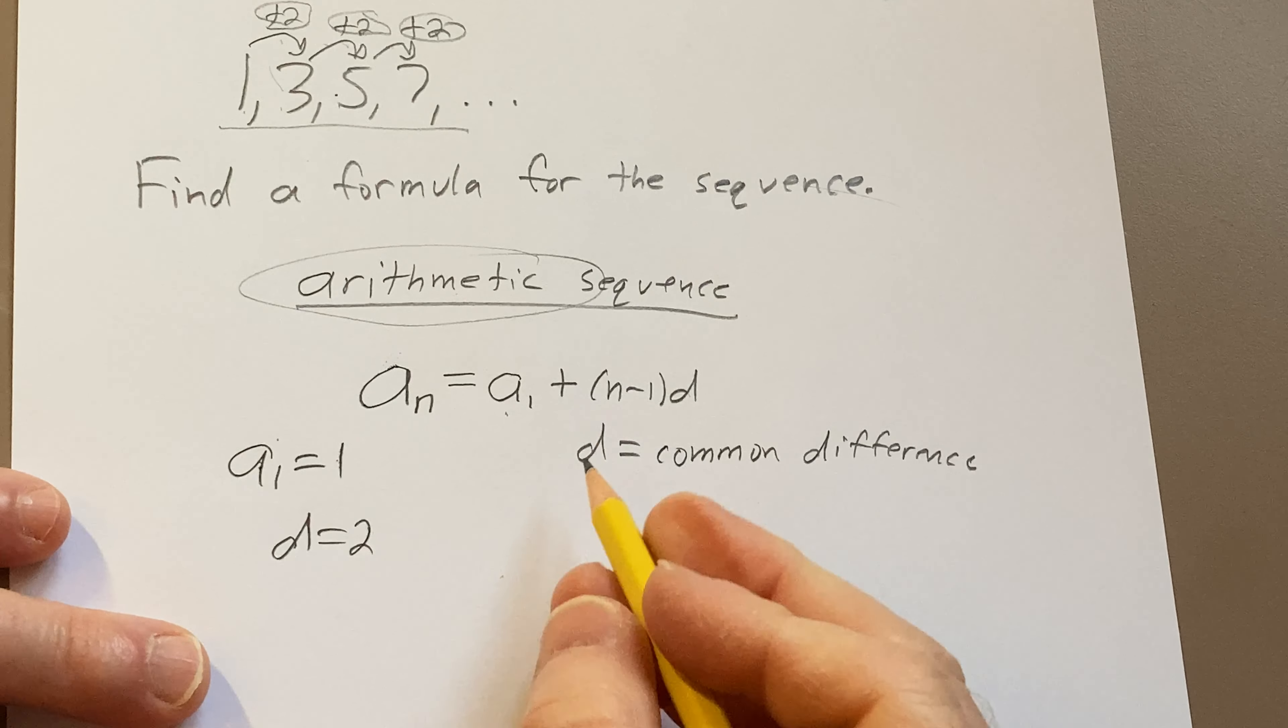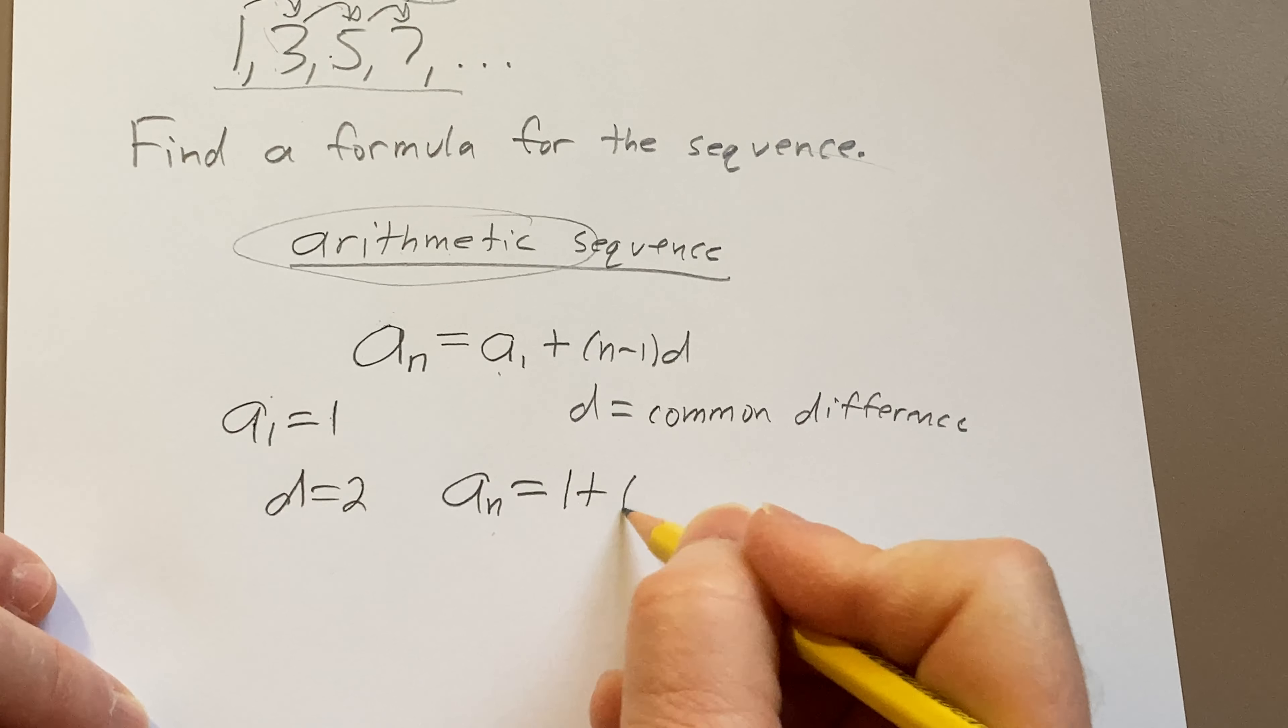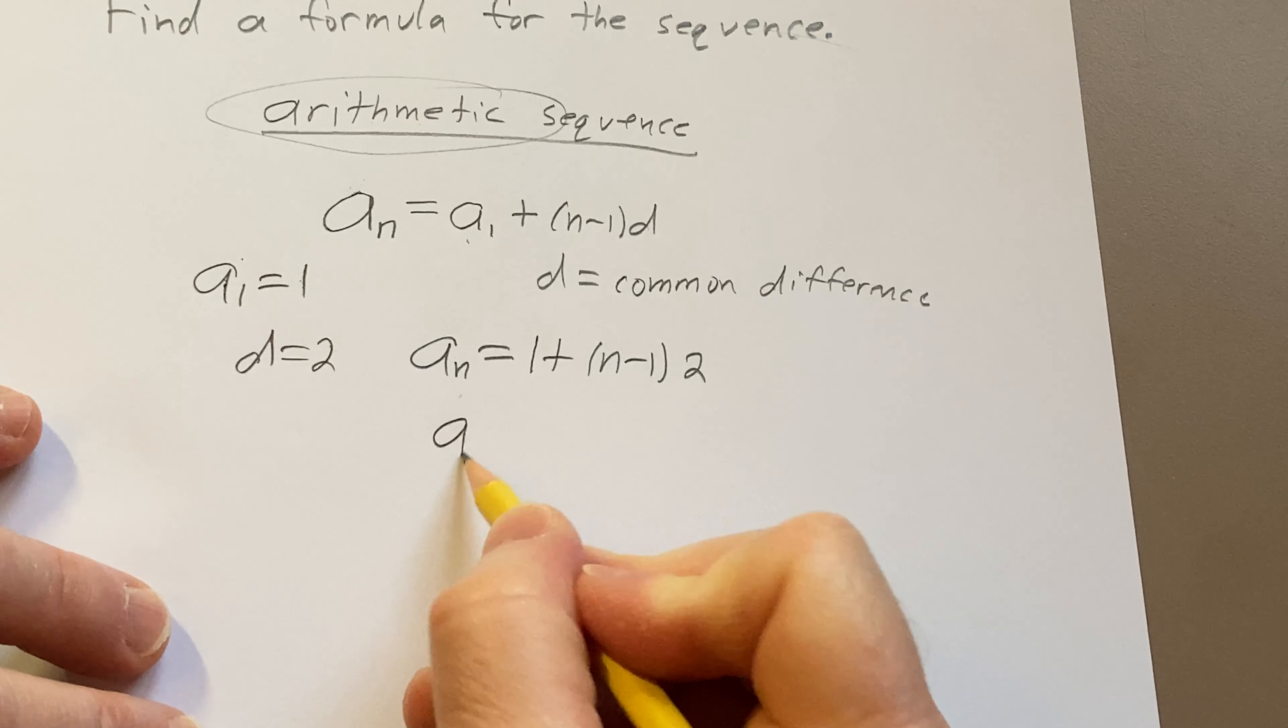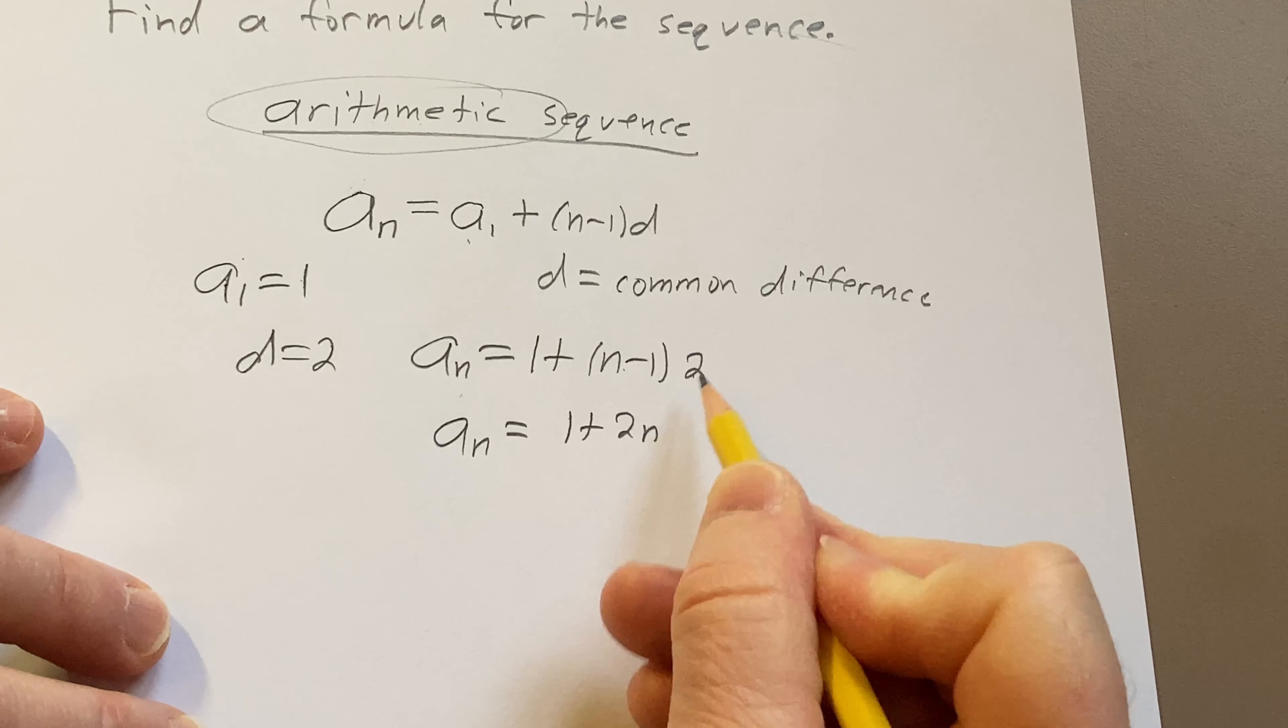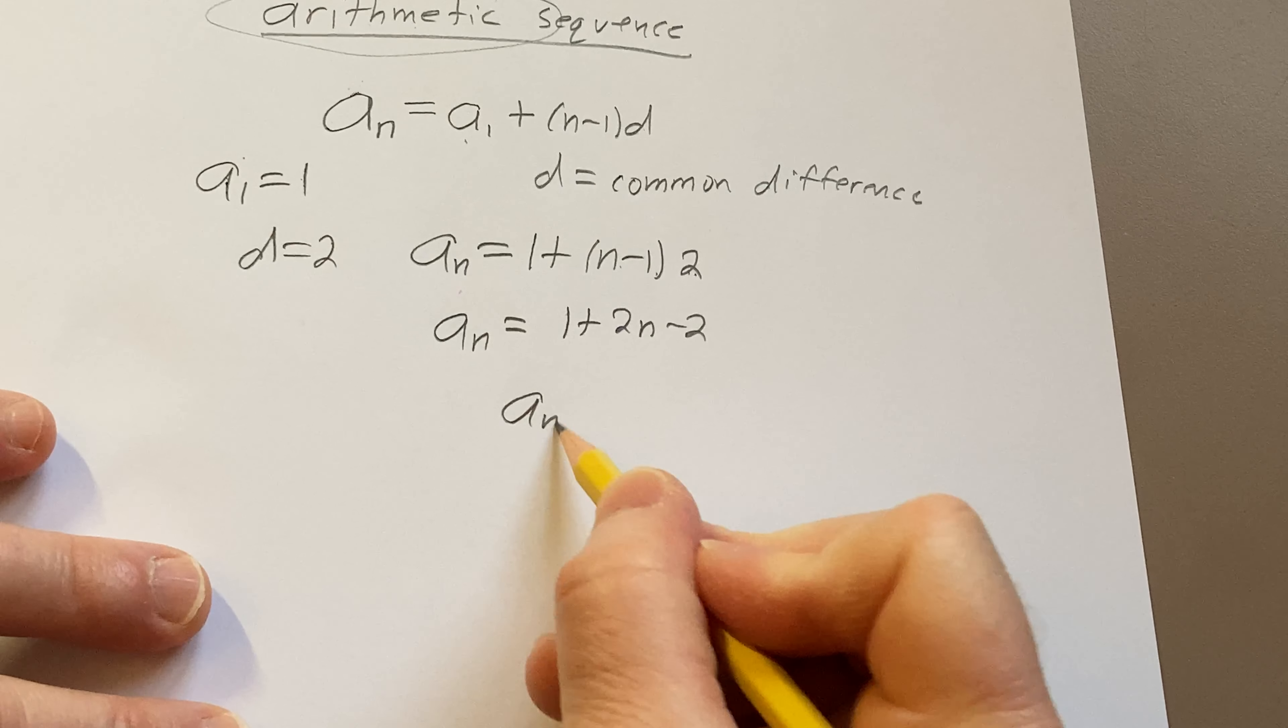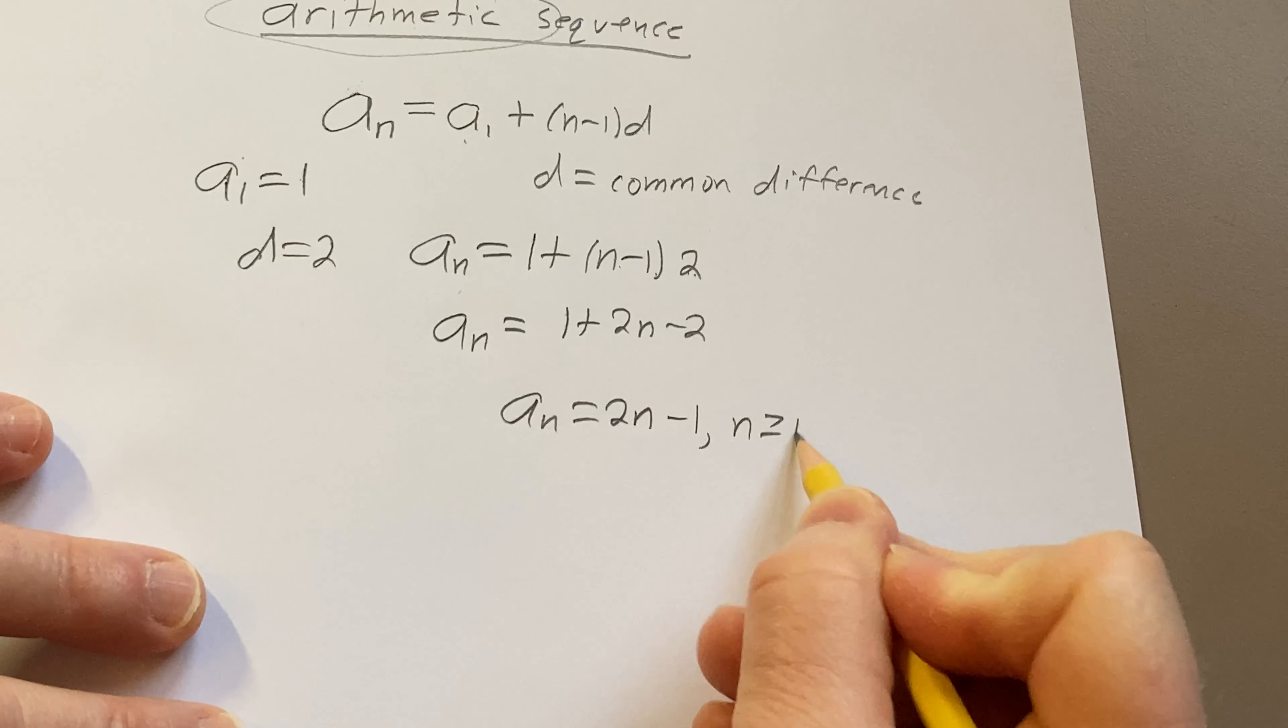So now we plug everything into our formula, so we have 1, and then n minus 1 times 2. So this is 1, multiply the 2, multiply by negative 1 here, so we get 2n minus 1. And this is valid for n greater than or equal to 1.